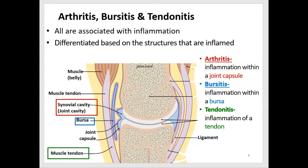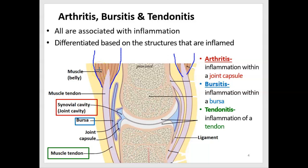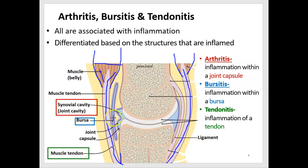Muscles are attached to joints. The outside of the muscle is covered in connective tissue, and when the muscle tissue ends, the connective tissues merge and form a fibrous cord-like structure that adheres the muscle to bone — these are called tendons. With overuse of the muscle, the tendon can become inflamed, or the tendon can rub up against bone and become irritated. So inflammation takes place — that's tendinitis.